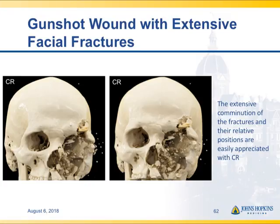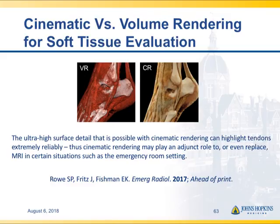When we look at trauma, here's a gunshot wound with multiple facial fractures. You can almost feel the impact of the fracture and the multiple fragments of bone and their orientation and location. We are also looking carefully at the ability to use cinematic rendering for tendons, tendon injuries, and soft tissue injuries around the knee and ankle — very nicely showing the tendons' relationship to the fibula as well as to the calcaneus.